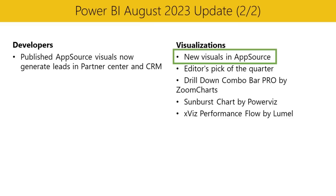For visualizations, we've got some new visuals in AppSource: Performance Flow by XViz, Timelines by Bichamp, Composed Line Area Bar Chart by DevelopFunnels, GalaGeo for Power BI, and Radial Chart also by DevelopFunnels.